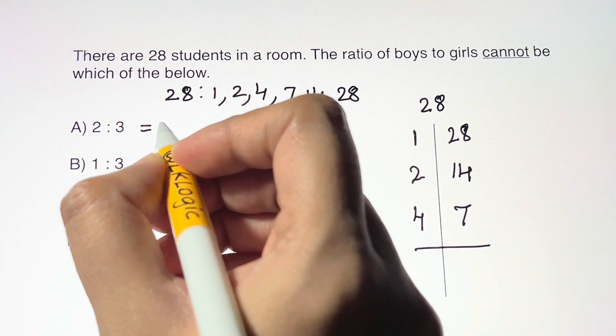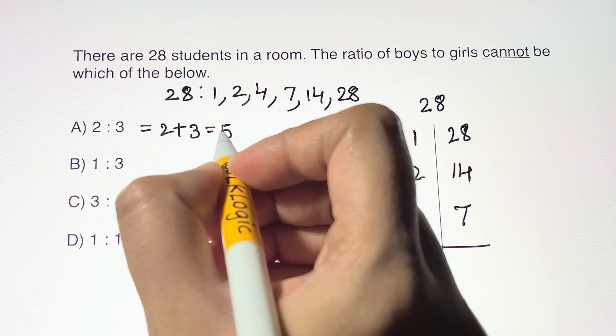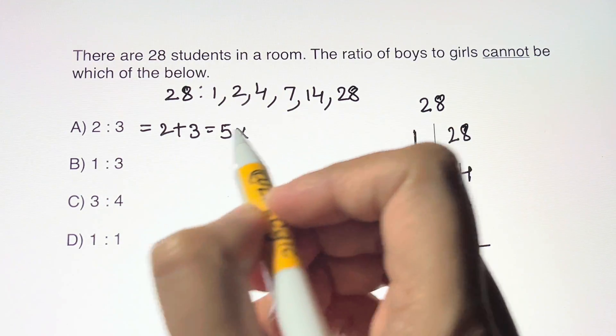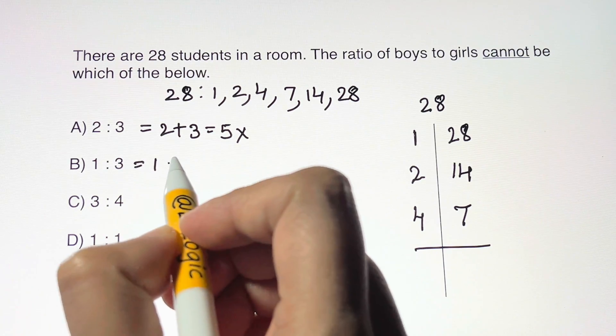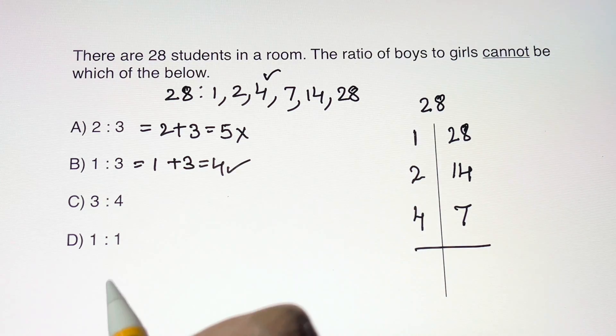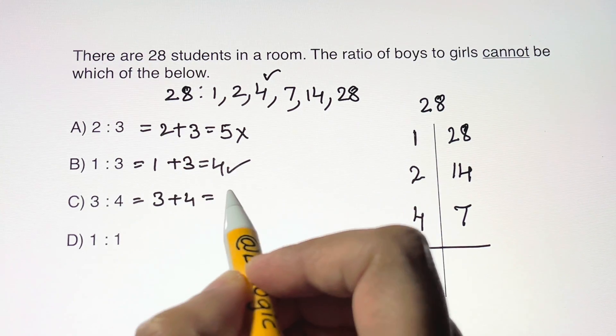1 plus 3 gives you 4. 4 is a factor of 28, so yes. 3 plus 4 is 7. Is 7 a factor here? Yes, 7 is a factor.